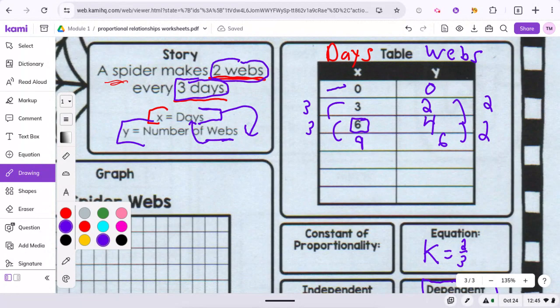So of course, for zero days, zero webs would have been made. And then for three days, the two webs would have been made. So the three and two.